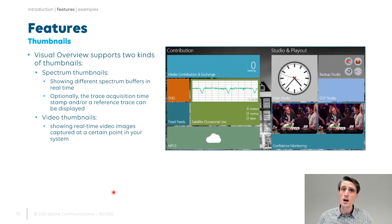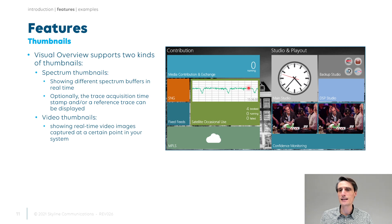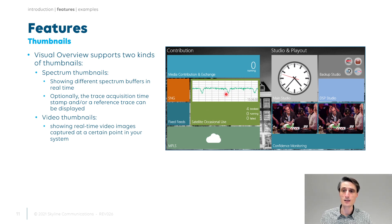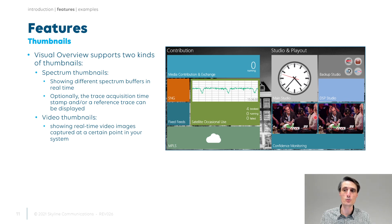We can also enrich it with some thumbnails. There are two types of thumbnails: first, the spectrum thumbnail. If you have spectrum analyzers continuously monitoring a certain signal, we can show the buffer there with a timestamp as well, so you can immediately see if a signal feed is still okay — coming in with some confidence monitoring. Or the confidence monitoring with video thumbnails — for instance a main and a backup being shown live in that visual overview. That's a nice feature to add to your visual graphics.